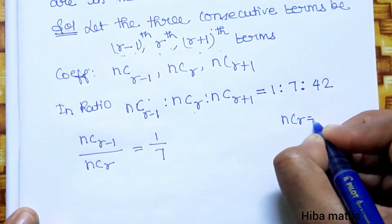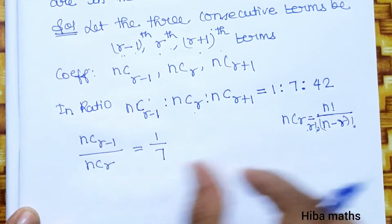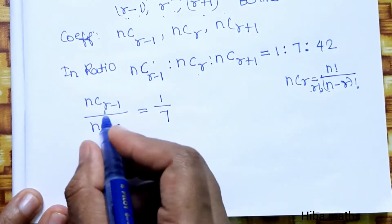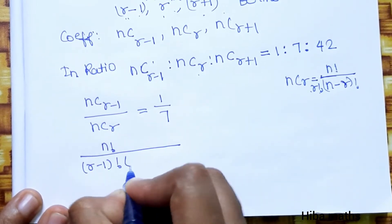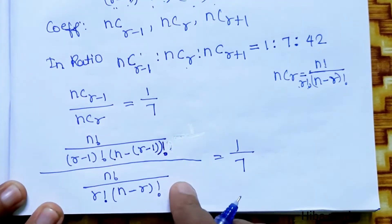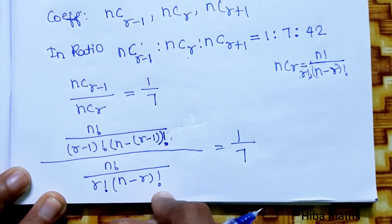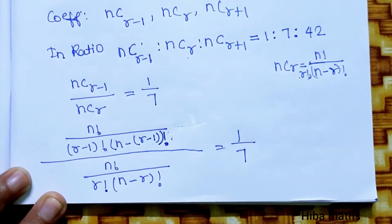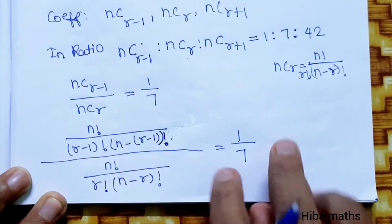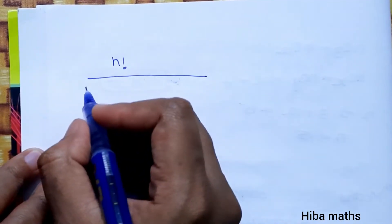We expand using the formula nCr = n! / (r! × (n-r)!). So nCr-1 = n! / ((r-1)! × (n-r+1)!) and nCr = n! / (r! × (n-r)!). Dividing nCr-1 by nCr, we get the reciprocal of nCr multiplied by nCr-1.